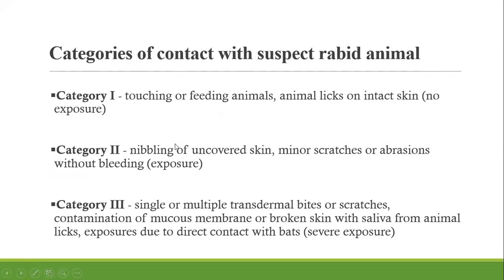In terms of exposure categories: Category 1 is no exposure — touching or feeding animals with intact skin; very little chance of getting the virus. Category 2 is an exposure category — the skin has minor scratches or abrasion and an animal comes into contact with or licks you. Category 3 is severe exposure — large bites or scratches with significantly broken skin and animal saliva present. This categorization is important for management: from categories 2 and 3, post-exposure rabies vaccination is mandatory, while category 1 does not require a vaccine.